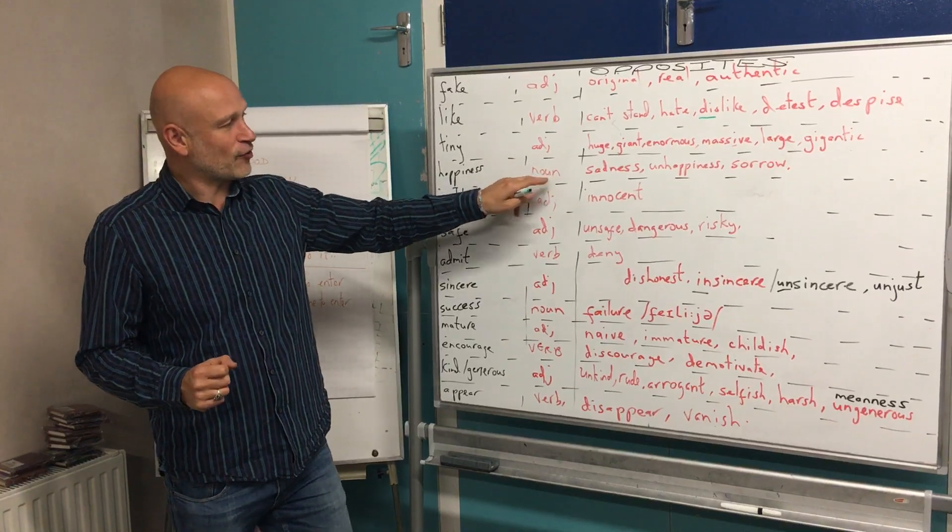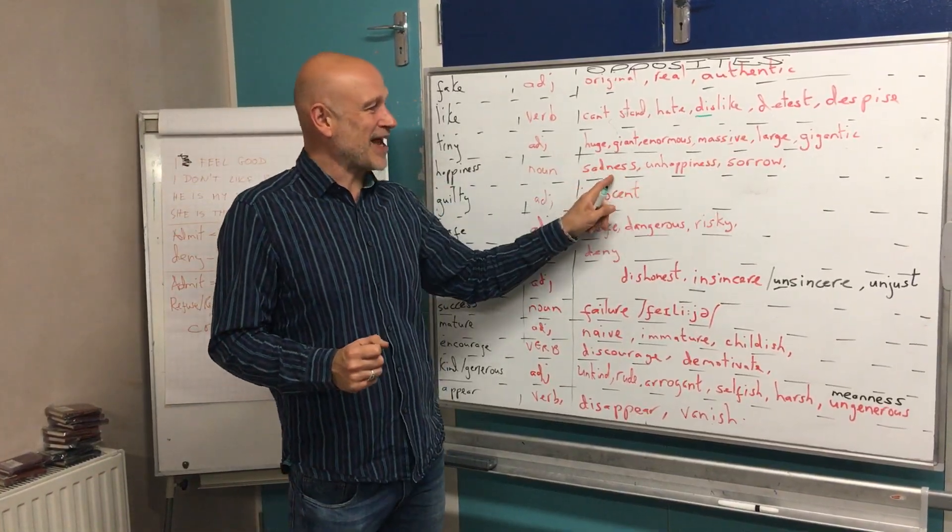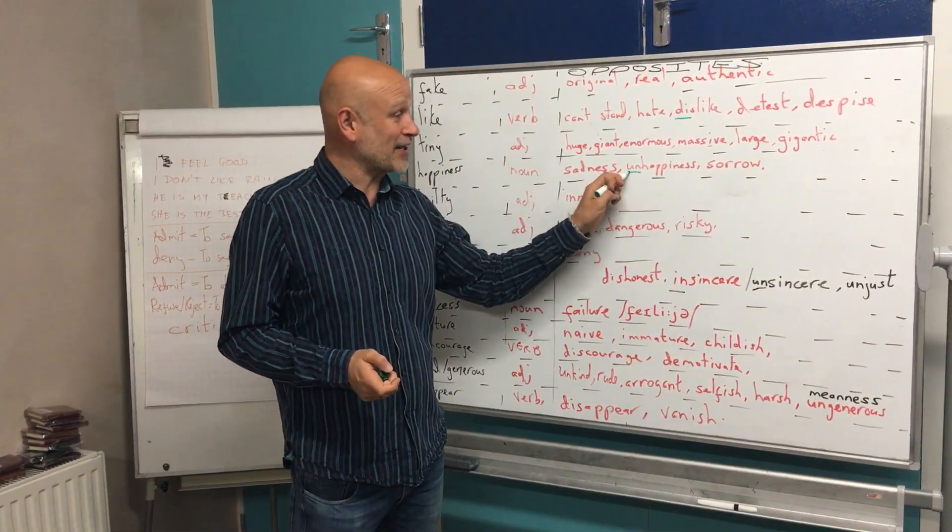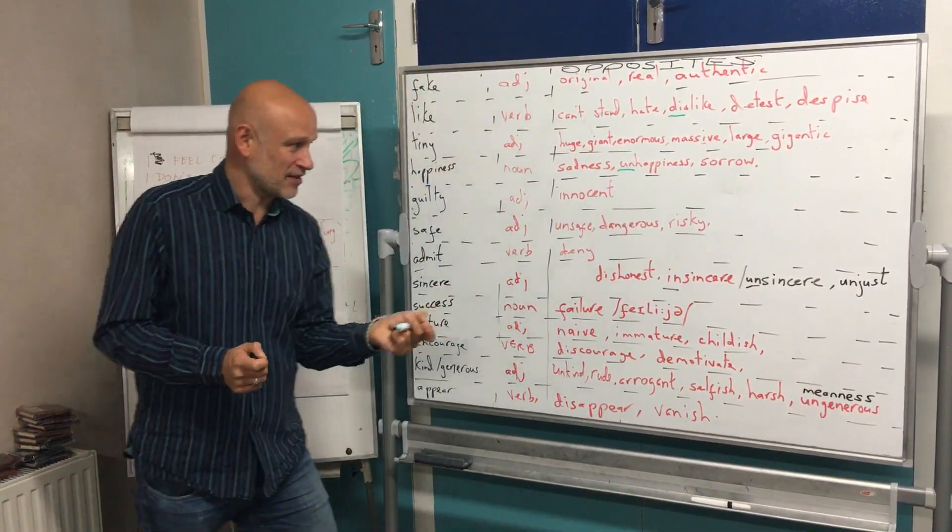Happiness is a noun. I really like these two: sadness and sorrow. A really good word. Well done. Opposite: if you want to add a prefix, unhappiness. Well done.